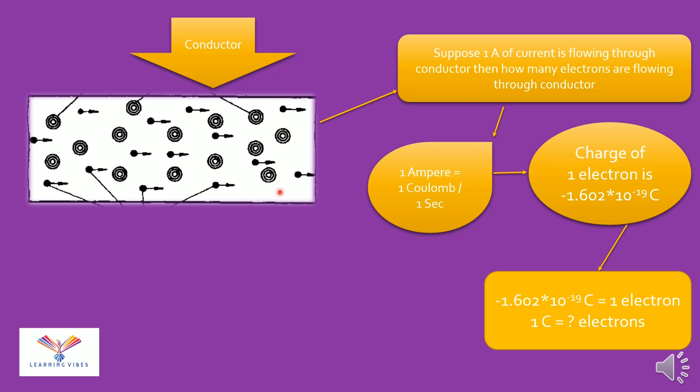Now let's understand at this point if we are measuring number of electrons. Then by cross multiplication we will get 6.24 into 10 raised to 18 electrons are flowing every second from this point if the current is 1 ampere.